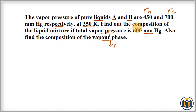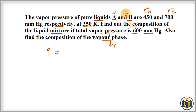Now let's do the first part: calculate the composition of the liquid mixture. The total vapor pressure of the solution is given, and according to Raoult's law, the vapor pressure of the solution equals the sum of the vapor pressures of the individual components. Since there are two components A and B, we get P = PA + PB.